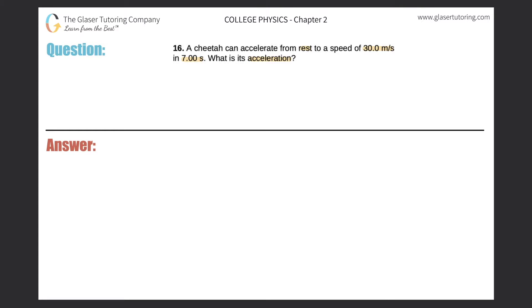Okay, so let's first start with a formula for acceleration. Remember that the acceleration, that's the average acceleration of an object, will be equal to the change in the velocity of the object divided by the change in time.